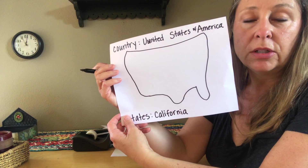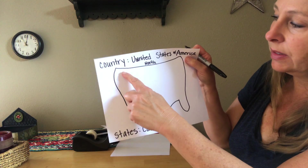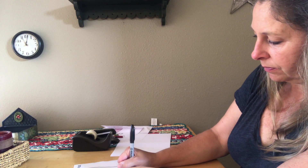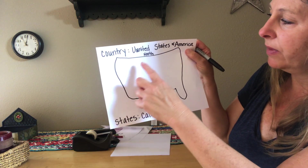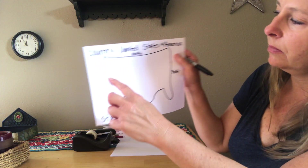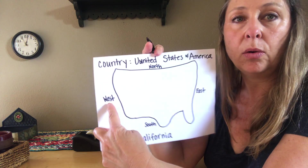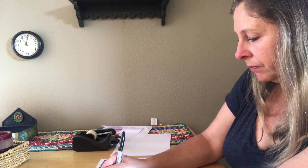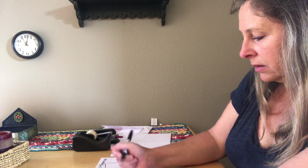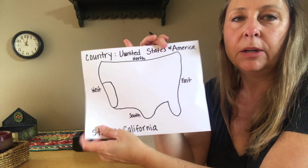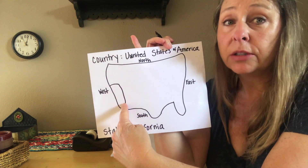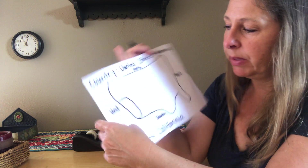So if this is our country, if this whole thing is the United States, it's a big land with 50 states — do you know where California is? When we look at maps, the top of our map is north, the bottom is south, over here on the right is east, and on the left side is west. We are in the west.